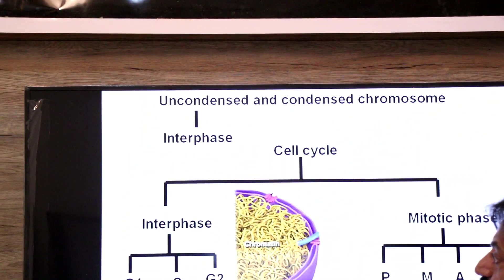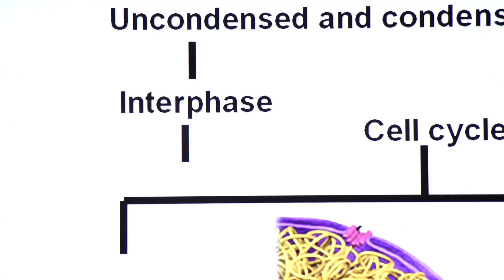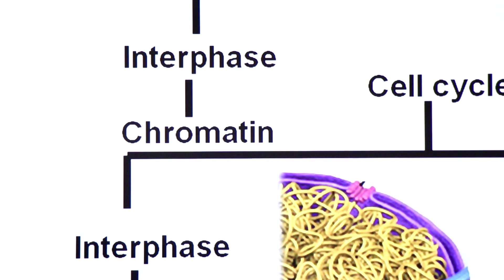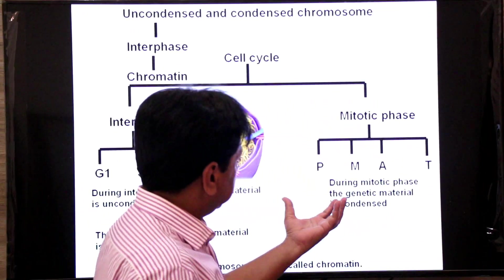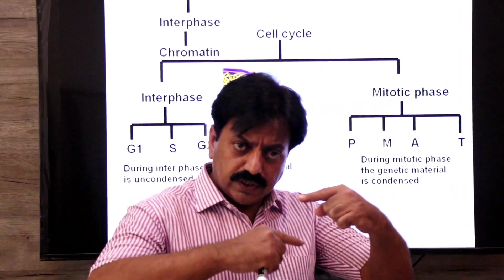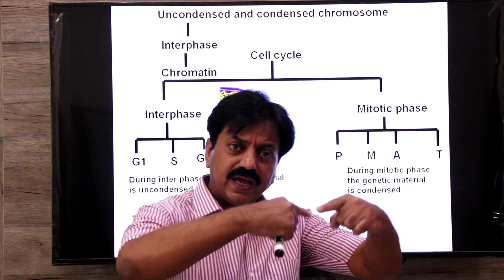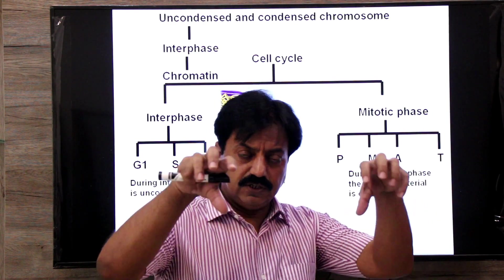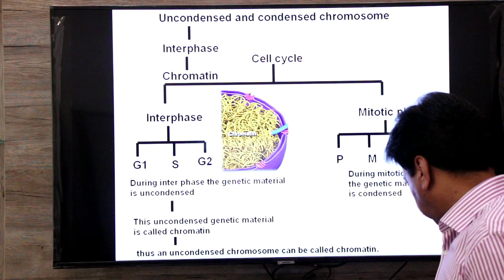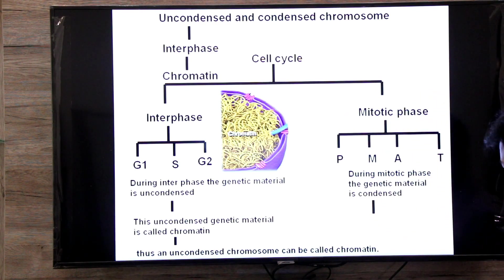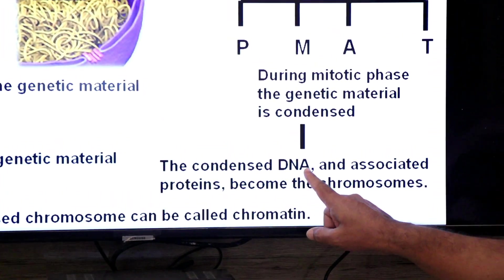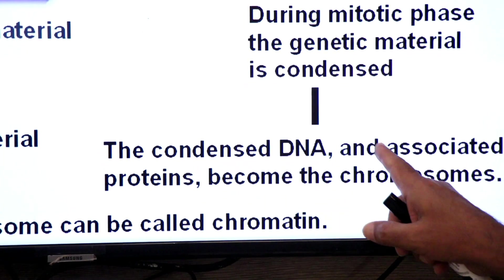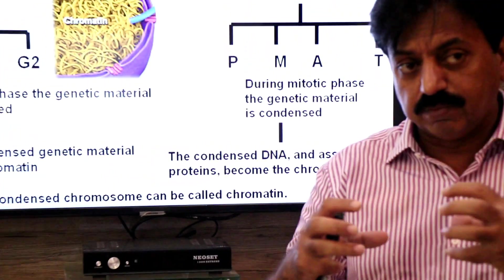So in interphase, the genetic material is uncondensed, and in its uncondensed form it is called chromatin. An uncondensed chromosome is also chromatin. Now during the mitotic phase, the condensed DNA and associated proteins become the chromosome — the histone proteins which are part of chromatin.